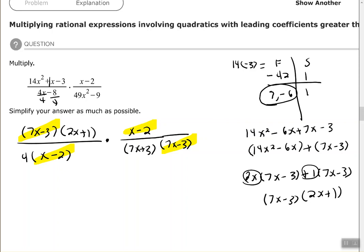And I don't have any other like factors, common factors. So now I can write my answer out. So all I have left in my numerator is 2x plus one. Since I don't have any other factors, I don't have to put that in parentheses.